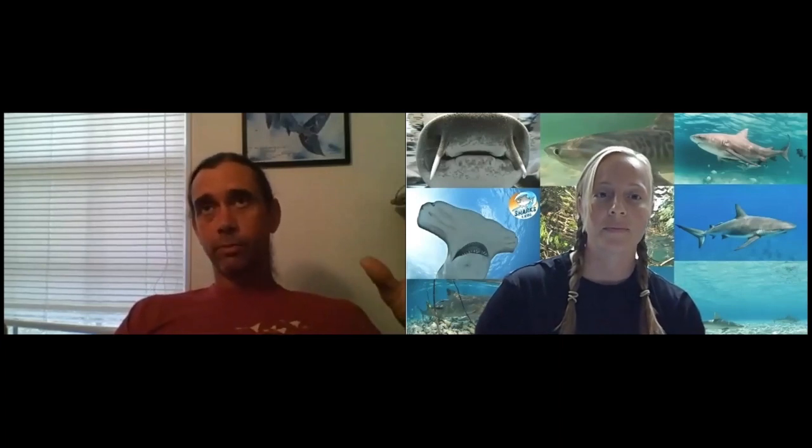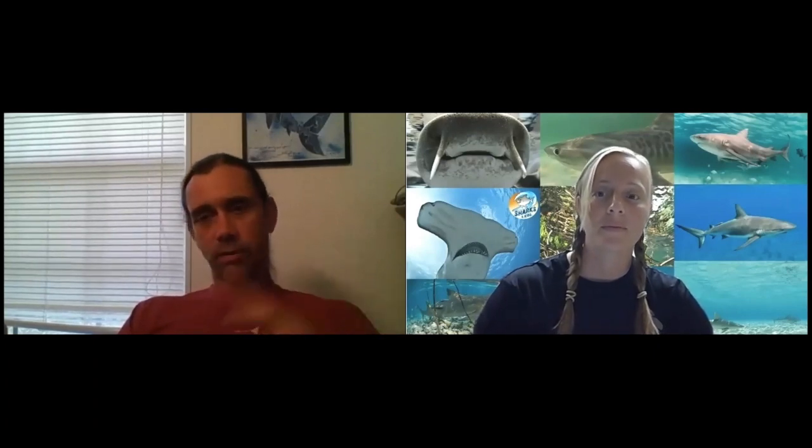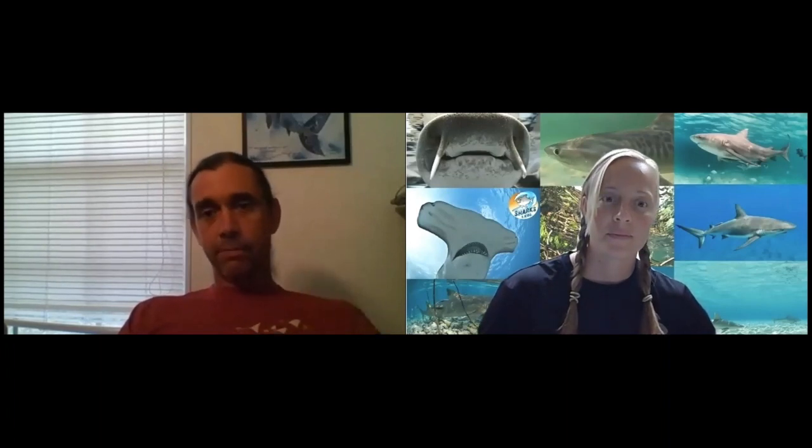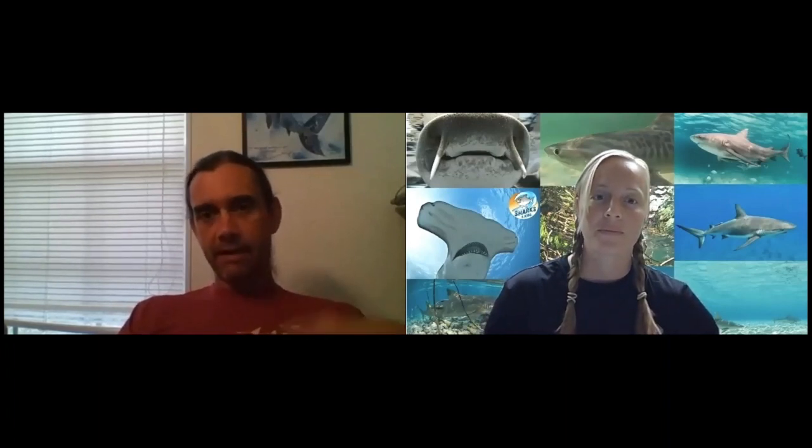Gill nets are also a big issue. The main reason we have sawfish left in the US is probably because Florida banned gill nets in the 1990s. That was likely the main source of mortality on juveniles, and since gill nets are now outlawed, the population has been able to recover. It also helps that most of the main sawfish habitat in Florida — Everglades National Park, the 10,000 Islands National Wildlife Refuge — is under some form of protection.